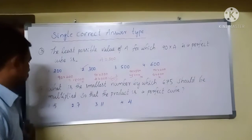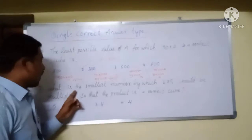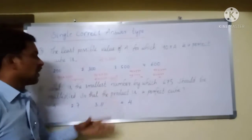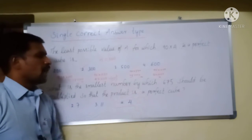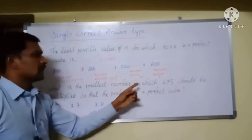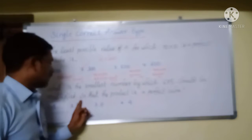Checking 90 × 600 gives 54000 — also not a perfect cube. So we place 3 in place of 'a' as the correct answer.